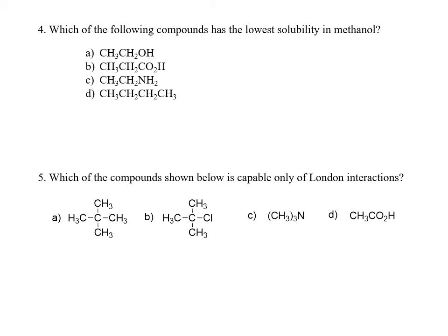Finally, compound D is butane, a nonpolar compound capable only of London interactions. If it were to dissolve in methanol, the only intermolecular interaction possible would be dipole-induced dipole interaction between polar methanol and nonpolar butane — much weaker compared to hydrogen bonding. So molecules of methanol would tend to exclude butane from their environment, and solubility would be expected to be very low. Compound D is expected to have the lowest solubility in methanol.